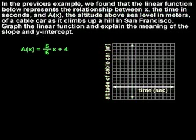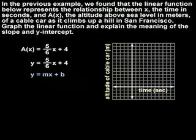Next, remember that a of x equals 5 sixths x plus 4 can be thought of as y equals 5 sixths x plus 4 so that we can use y equals mx plus b or slope-intercept form to graph the line. We can see that the value of m, or the slope, is 5 over 6, and the value of b, or the y-intercept, is 4.